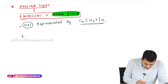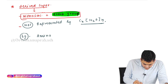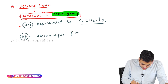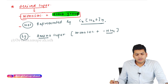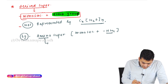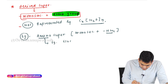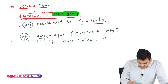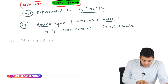An example of derived sugar is amino sugar. In an amino sugar, you take a monosaccharide and add an amino group to it. For example, if you take glucose and add an amino group, that is glucosamine. Similarly, galactosamine is also an amino sugar.